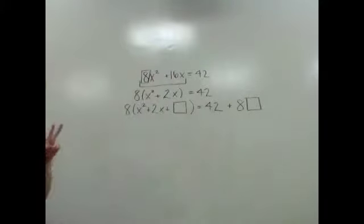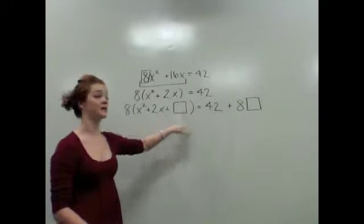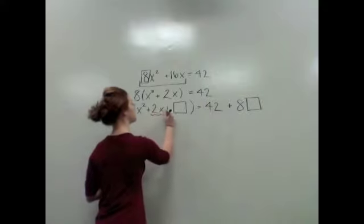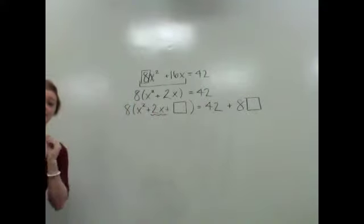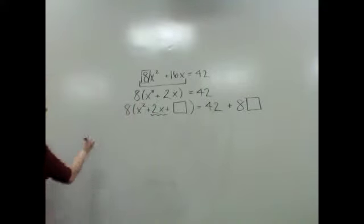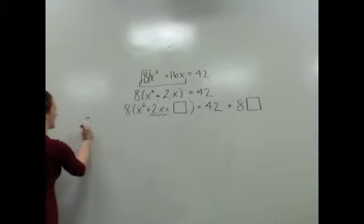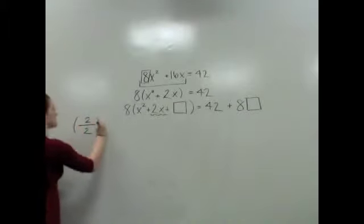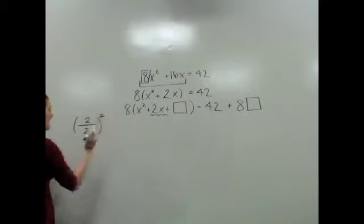Now there are two things to do to fill in my square, to essentially complete my square. Here, I'm going to take this b term. I'm going to take the b coefficient, which is a 2. I'm going to cut him in half, and then I'm going to square the result.